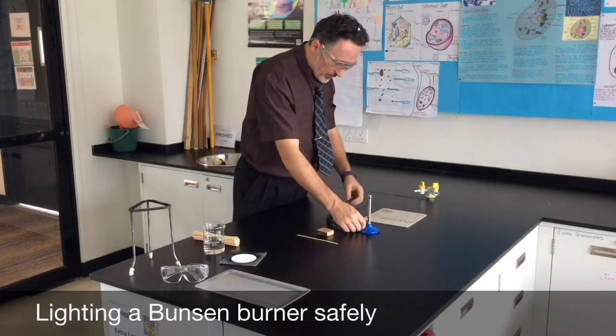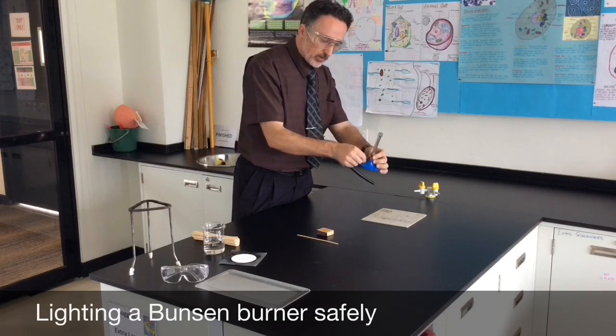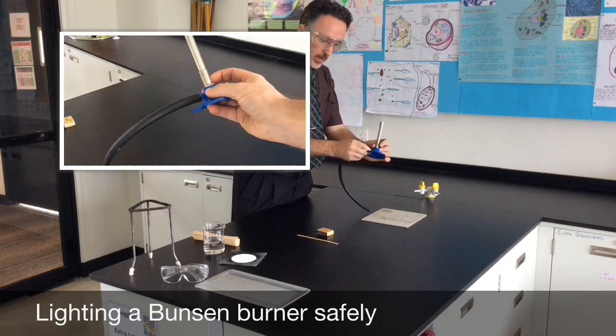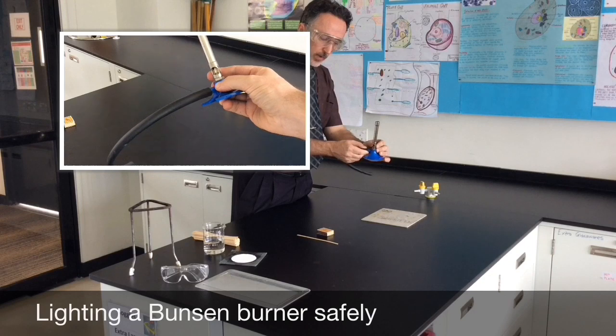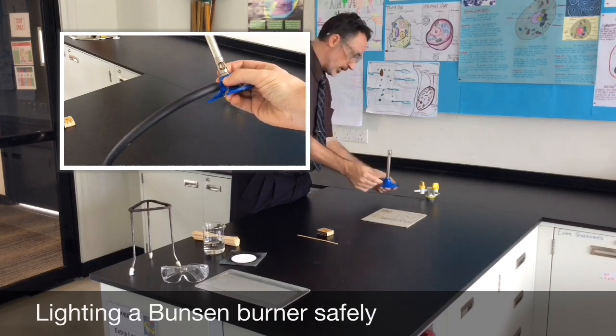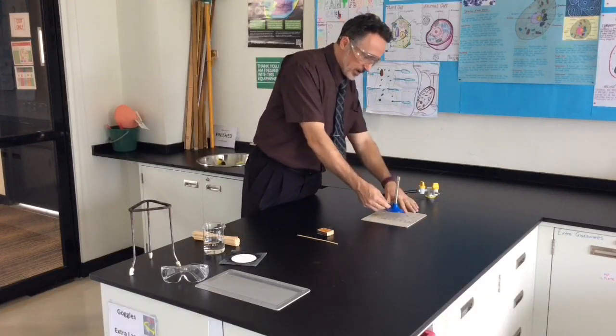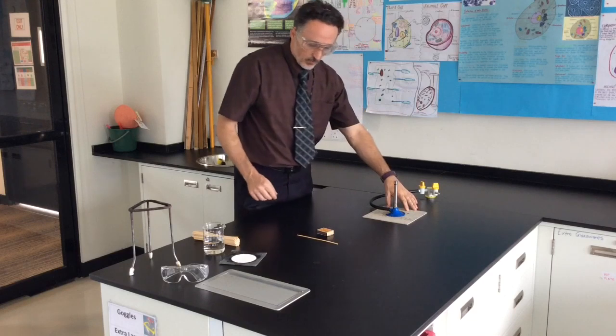Job number one: Close the air hole on the Bunsen burner. This collar here moves around and opens and closes the hole. We want to close it so that we can light the Bunsen burner safely. Push the rubber tube onto the tap and leave the Bunsen on the heatproof mat.